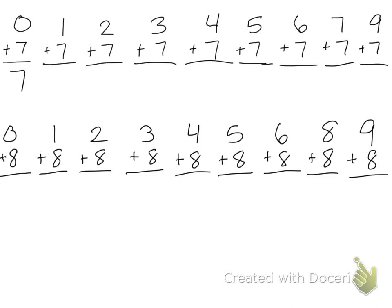0 plus 7 is 7, 1 plus 7 is 8, 2 plus 7 is 9, 3 plus 7 is 10, 4 plus 7 is 11, 5 plus 7 is 12, 6 plus 7 is 13, 7 plus 7 is 14, and 9 plus 7 is 16.